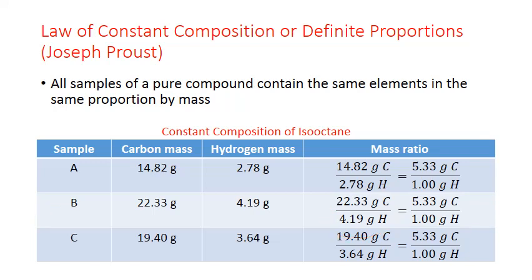And we see the same thing in our third sample, sample C. This time we isolate 19.4 grams of carbon and 3.64 grams of hydrogen. The ratio of these two masses, though, still gives us 5.33 grams of carbon for every one gram of hydrogen.